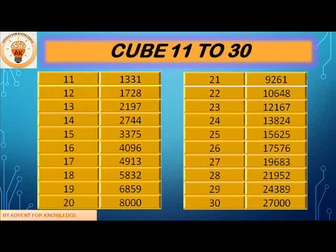Now let's begin the cubes of numbers from 11 to 40. Firstly we'll do from 11 to 20. 11 cube is 1331, 12 cube is 1728, 13 cube is 2197, 14 cube is 2744.